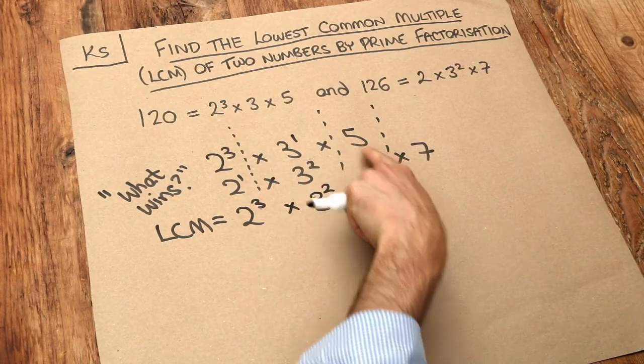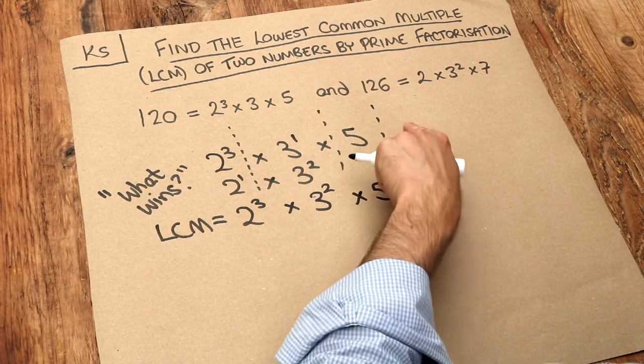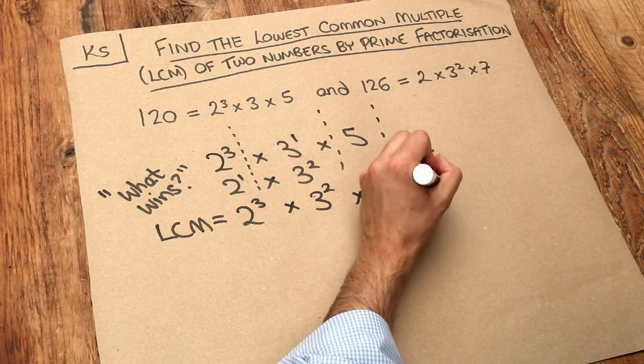What about 5 and nothing? Well 5 is going to beat nothing so we have 5. And what wins out of 7 and nothing? Well 7 wins and we have that.